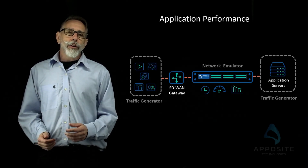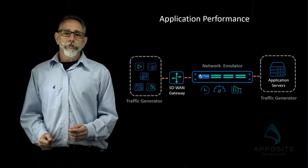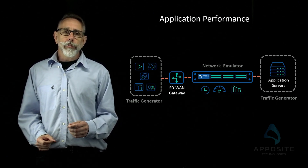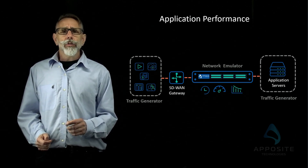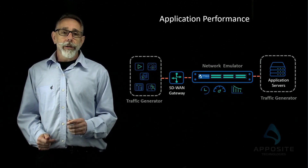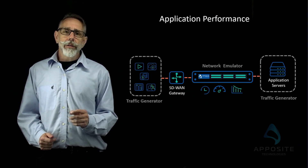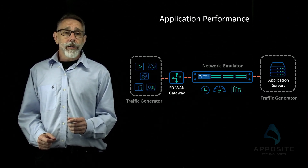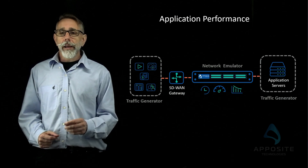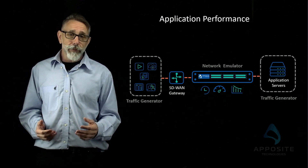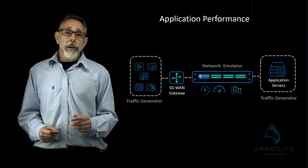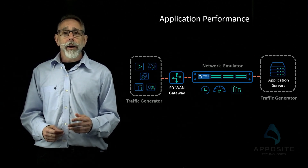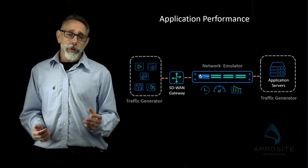Now that you've set your quality of service and tested link failover, you need to know: do your applications have enough resources to perform optimally? Using a network emulator with a traffic generator lets you test how the SD-WAN gateway will respond to different network impairments and traffic loads. Some traffic generators even allow you to record and replay exact production traffic. This way you can measure network and application performance, identify failure points, and optimize applications before you go to production.